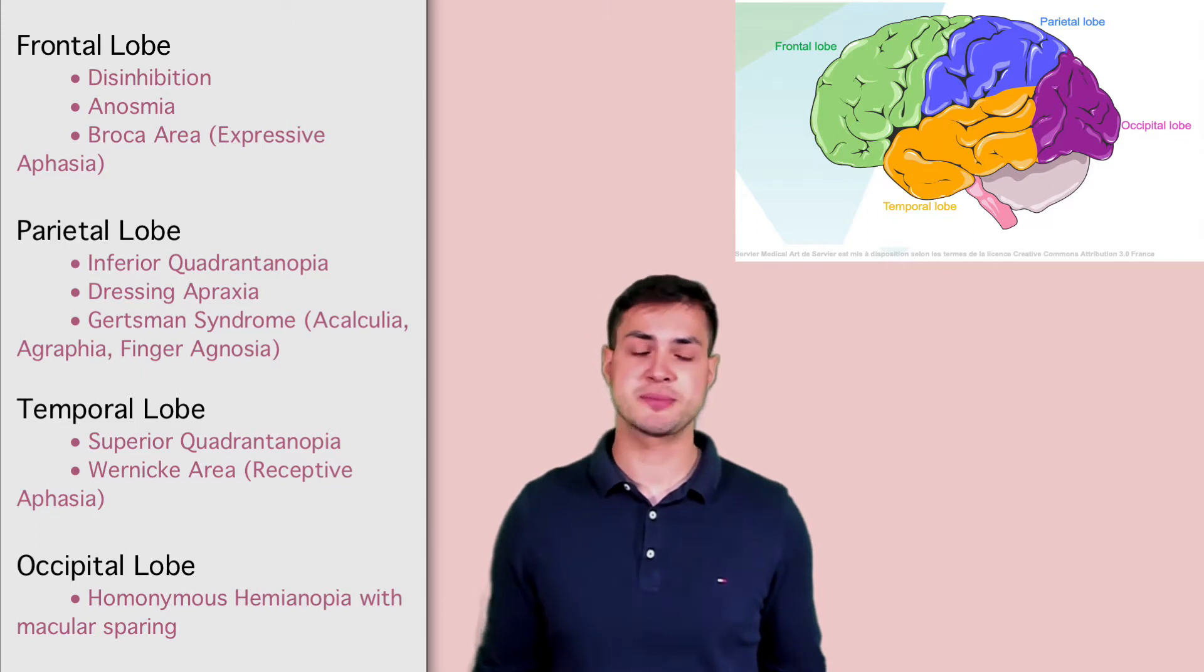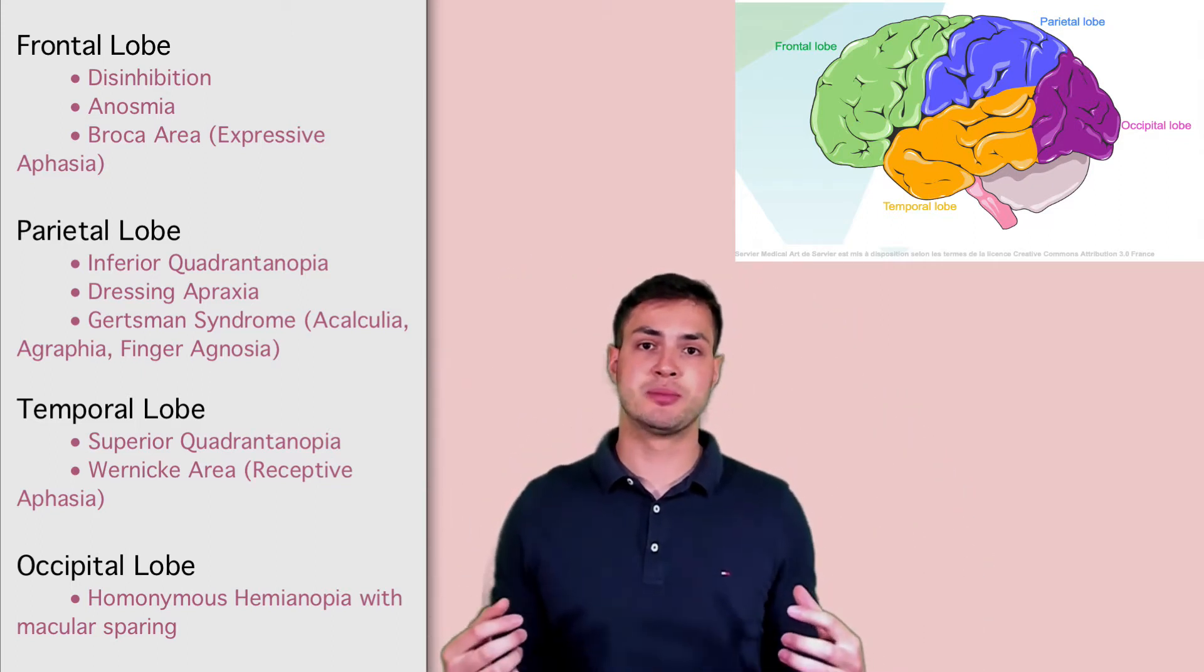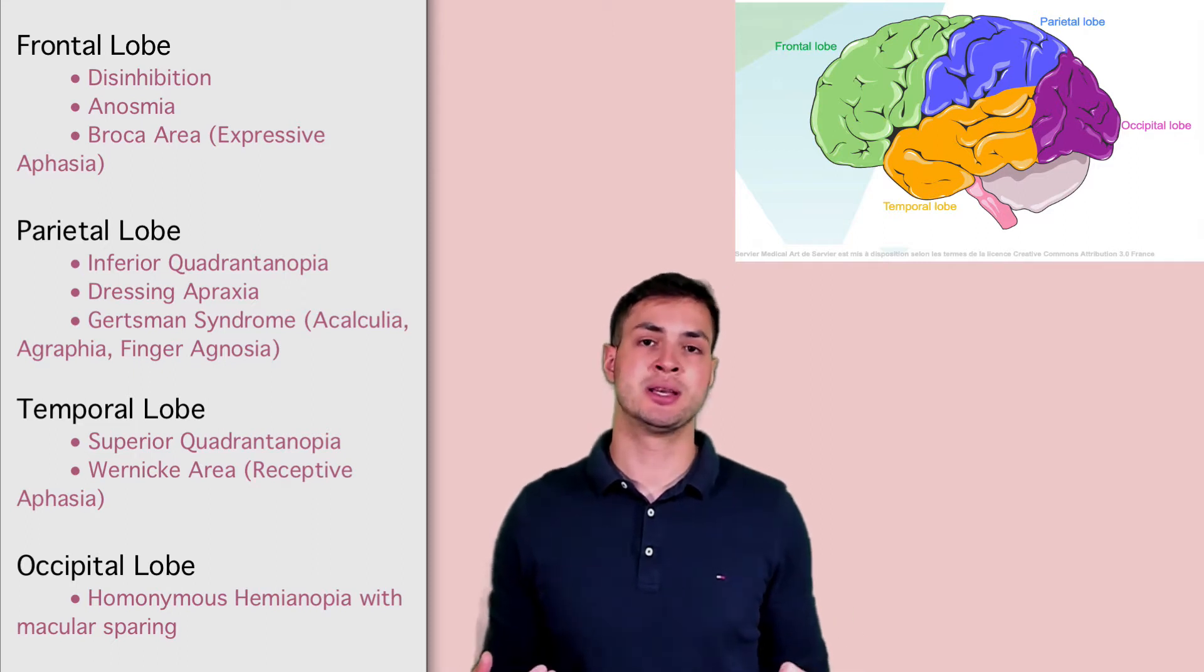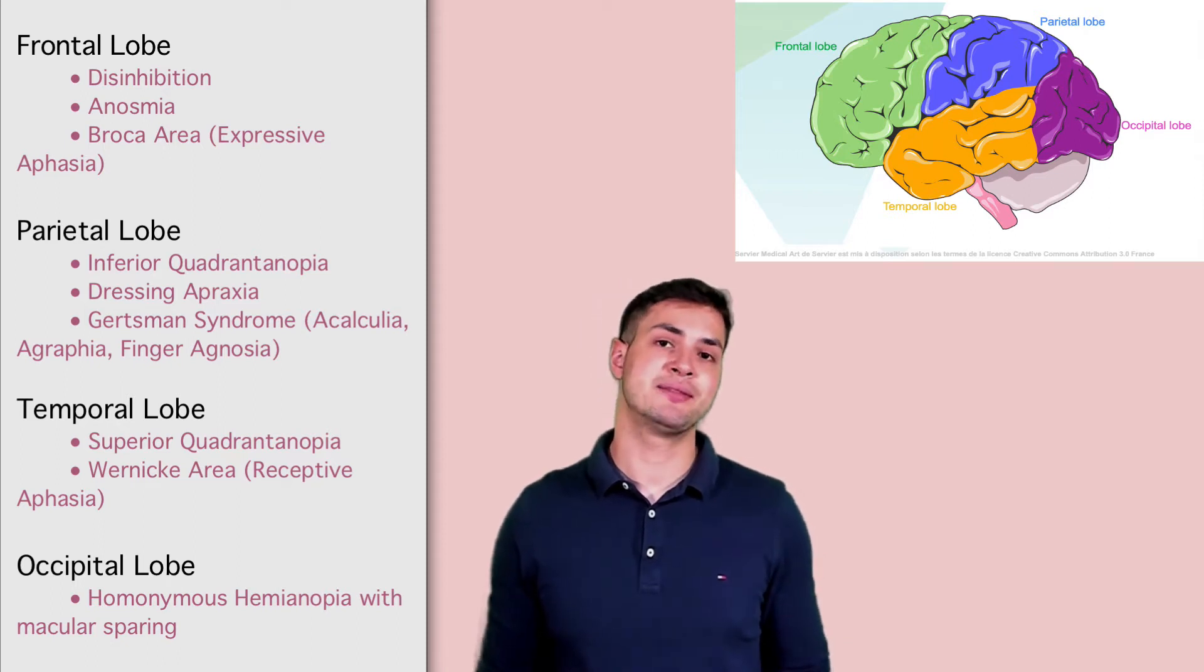The next thing we'll talk about is the parietal lobes. The parietal lobes sit just up here and when affected in the dominant parietal lobe, you get something called acalculia, agraphia and finger agnosia. This syndrome is called Gerstmann syndrome. The other thing you can get with parietal lobe lesions is a visual field defect, which is a homonymous inferior quadrantinopia.